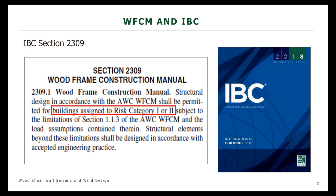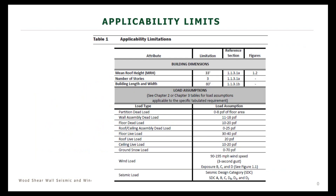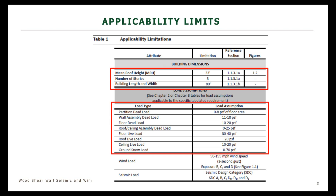The applicability limits mentioned in the IBC section language include: the mean roof height is limited to 33 feet, the number of stories is limited to three stories, and there are length and width limitations of 80 feet in plan. There are also limits on the loads applied to the structure, related to gravity loads. For snow loads, they can go up to 70 pounds per square foot.